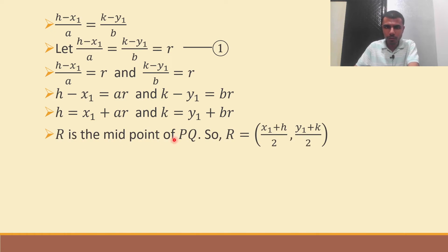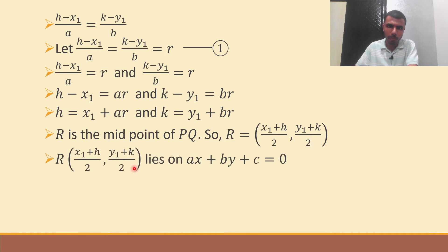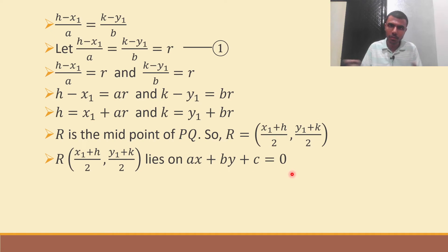R is the midpoint of PQ, as I already explained. So R has coordinates x1 plus h by 2 and y1 plus k by 2. And R lies on ax + by + c = 0.